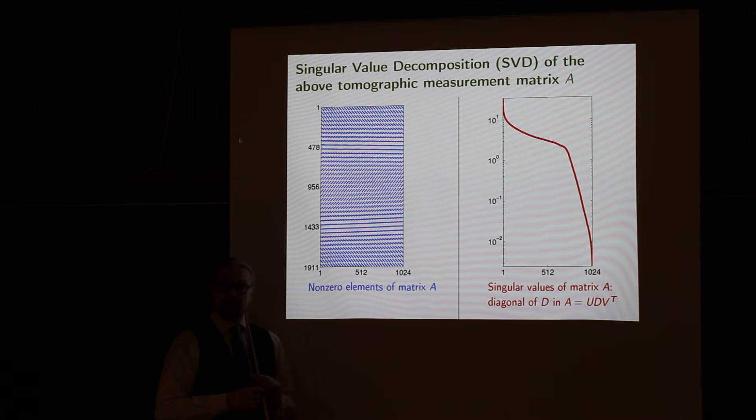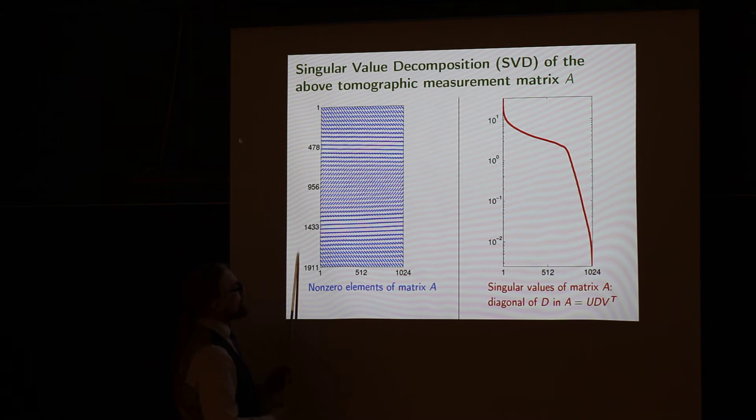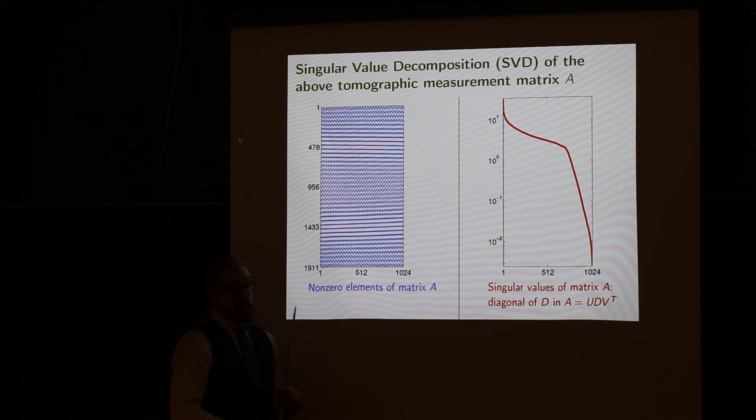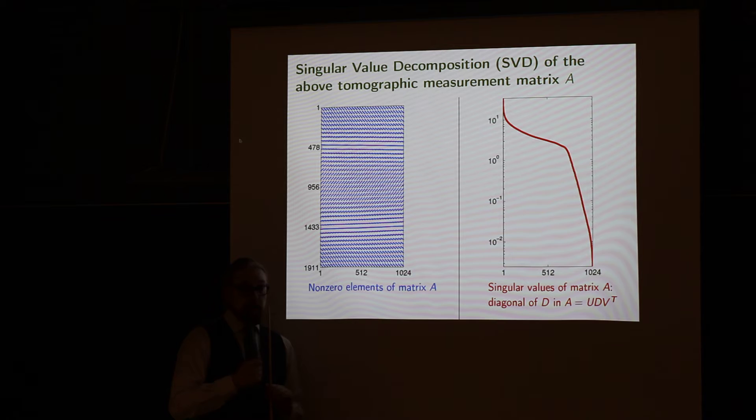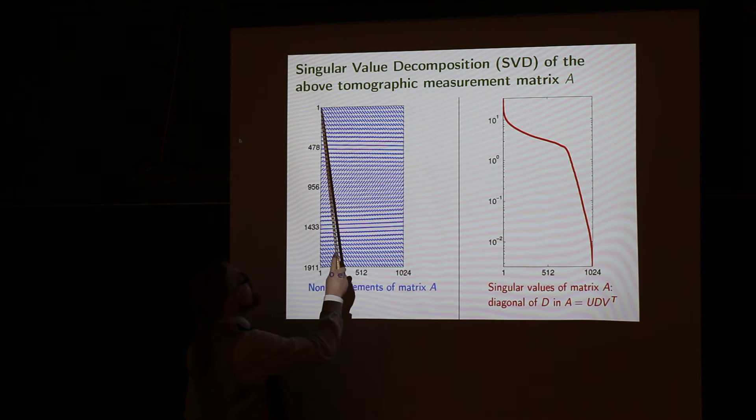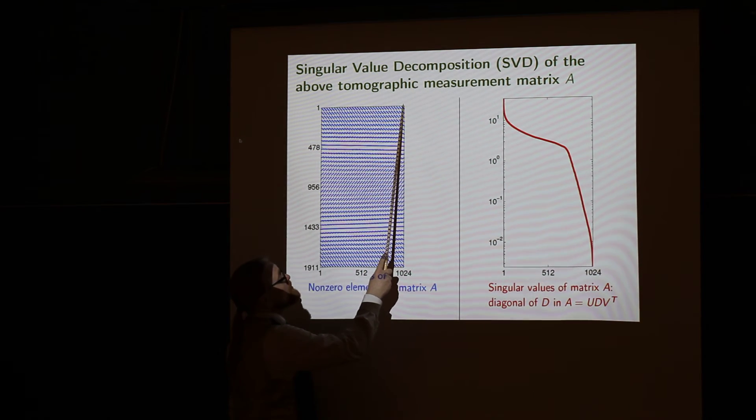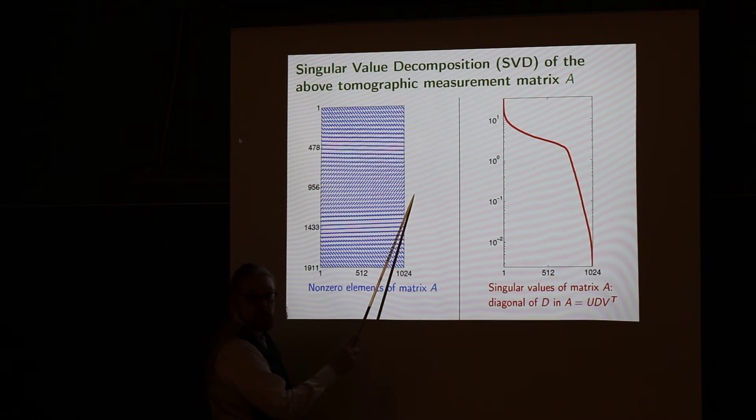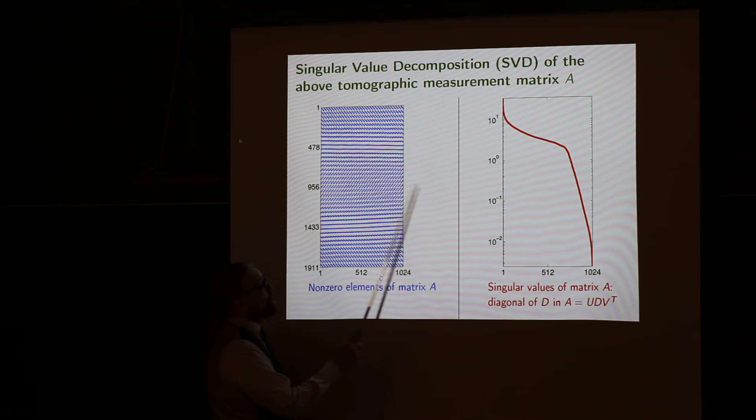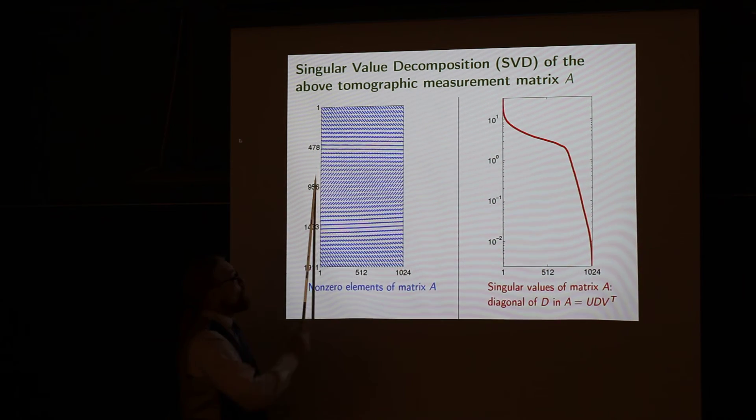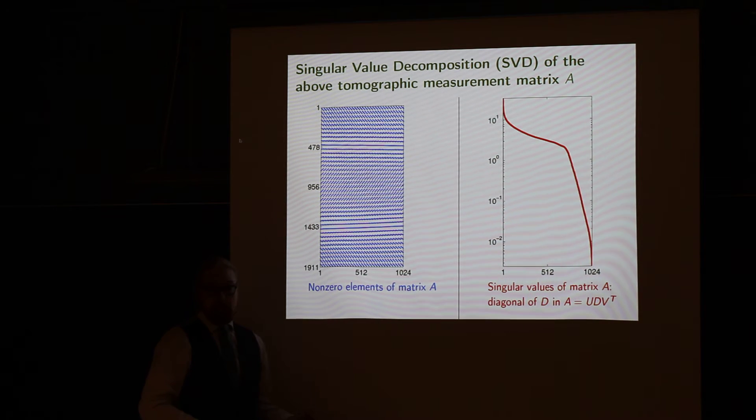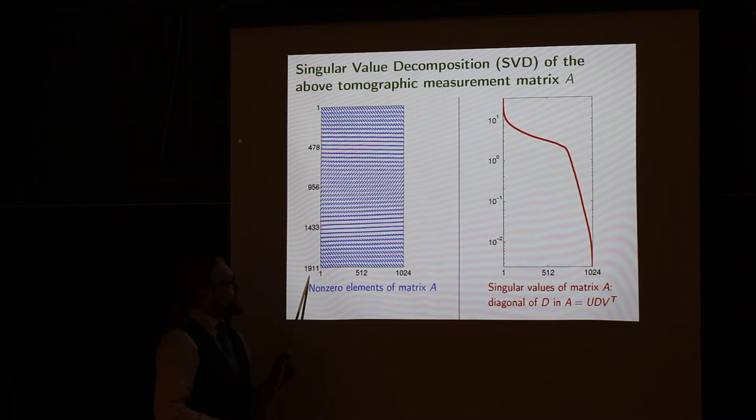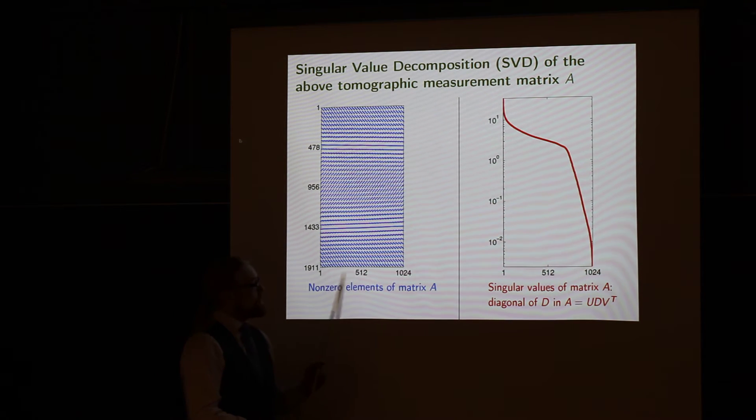The columns are along this line. We have M equals AF. And F is a 32 by 32 pixel image. So F has 1024 elements. So this matrix has 1024 columns. It's multiplying a vector that has 1024 elements. The result of the multiplication will have as many components as there are rows in this matrix, and that's the size of the measurement M. So the M vector has 1911 entries, and the F unknown has 1024 entries.